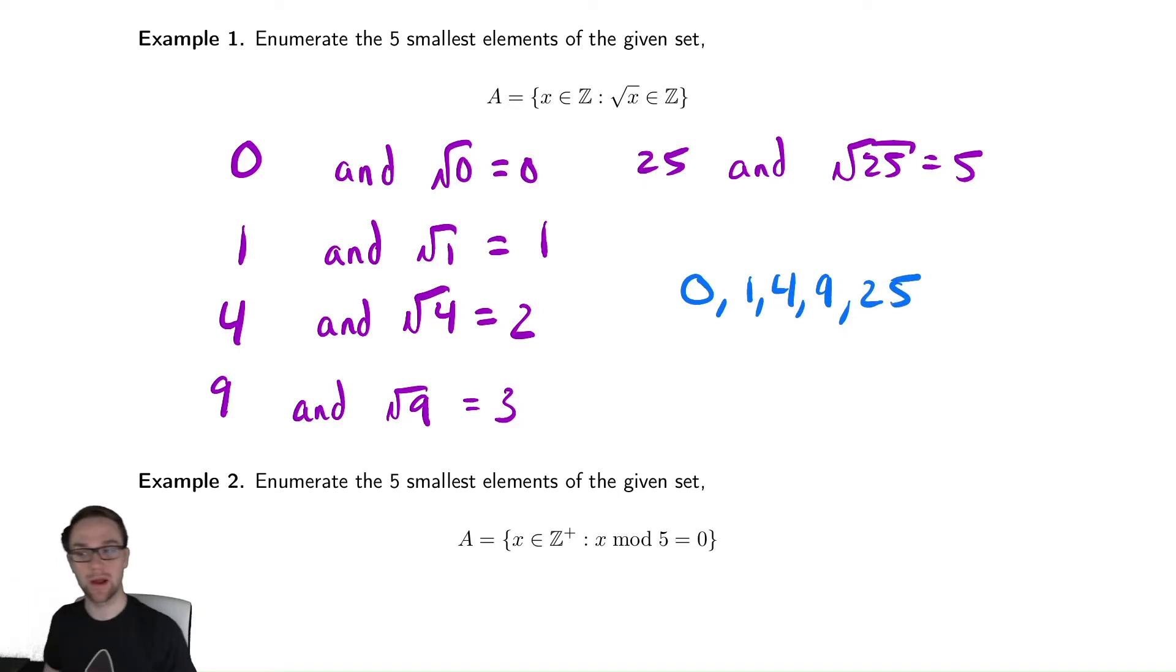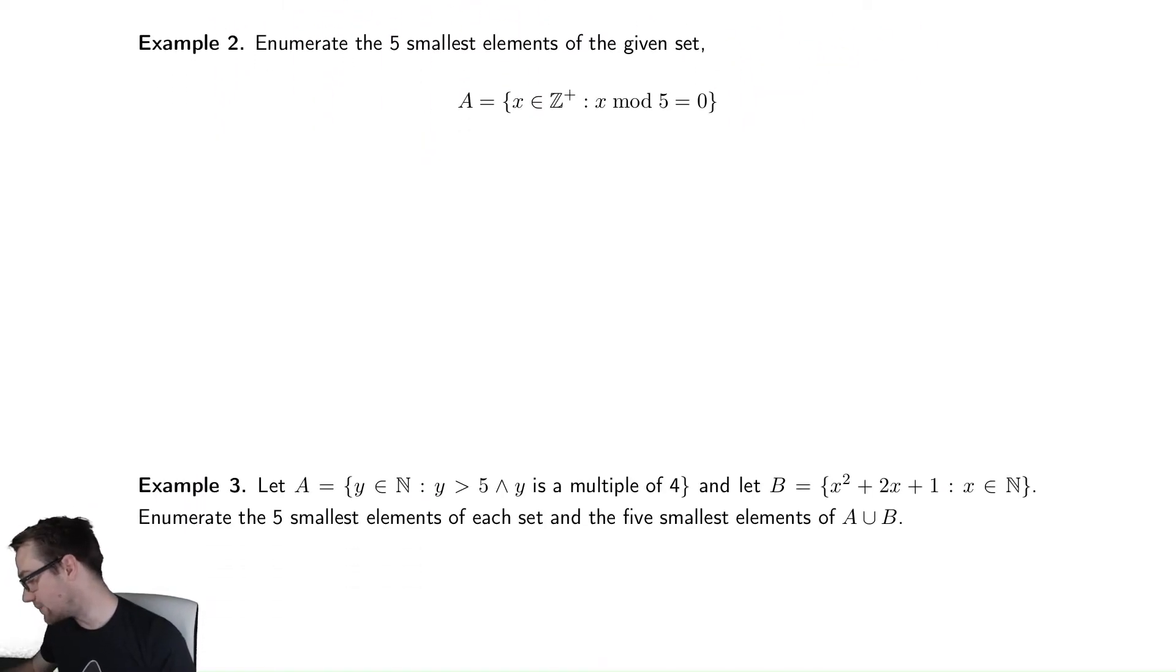This set could have alternatively been written as the set of all perfect squares. Equally valid way to write down this set. Our second example says: